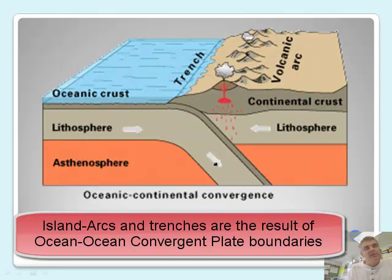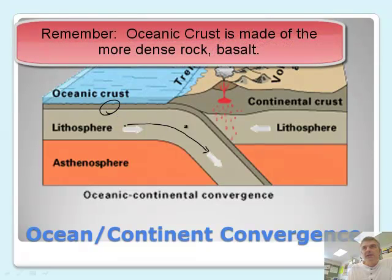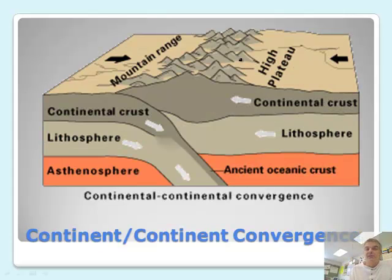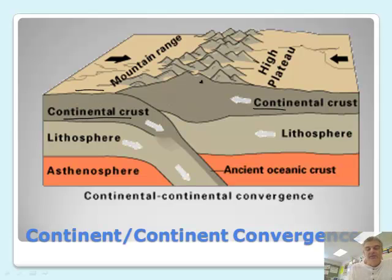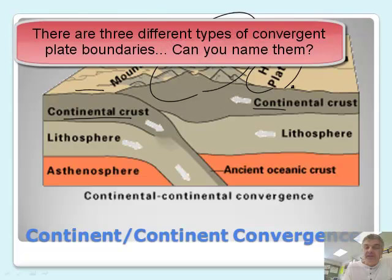If we do the ocean-continental convergence, one of them goes underneath because it's more dense. The ocean is made of basalt, whereas the continent is made of granite, which is less dense. So the more dense thing sinks, and as it sinks it creates volcanoes on the land — for example, the Mount St. Helens eruption. We can also have a continent and a continent converge — that's actually three types. When two continents collide, you just get big mountains. This is where India collided with Asia, creating the highest mountains in the world.